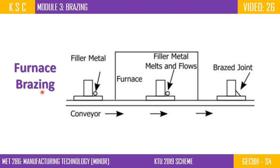This is furnace bracing. What do you want to join? These are the two components. The bracing operation will join them. The two pieces must be fixed. If you have a filler material, you can deposit the filler material in position. It is a solid filler material that fits the joint.